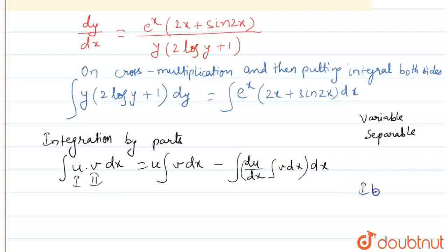This ordering of functions can be done on the basis of ILATE. Here, I stands for inverse trigonometric function, L for logarithmic, A for algebraic, T for trigonometric, and E for exponential.